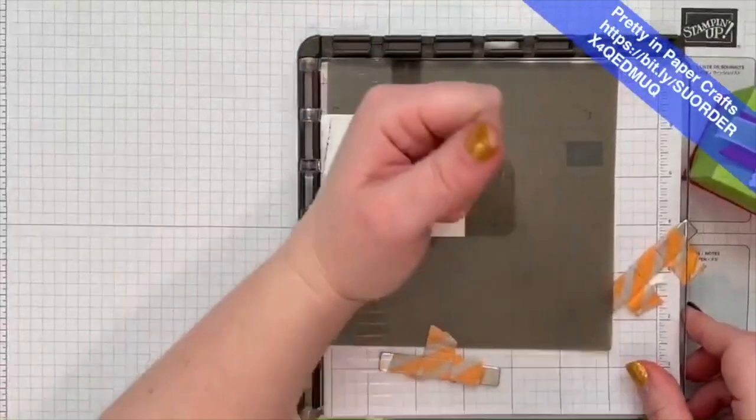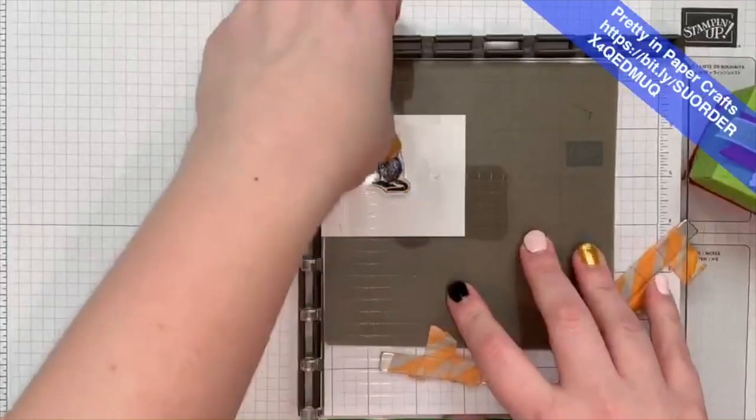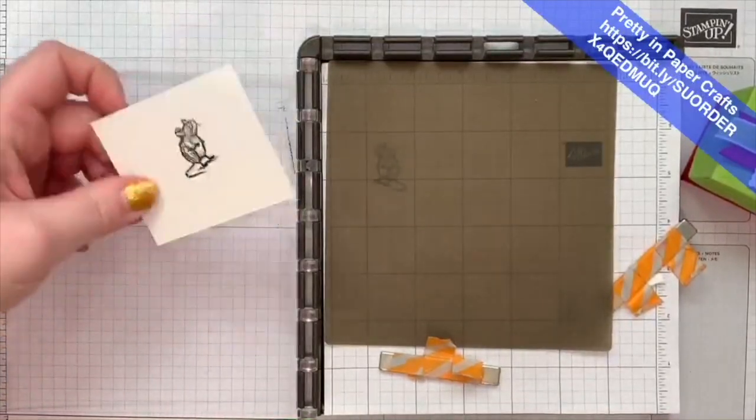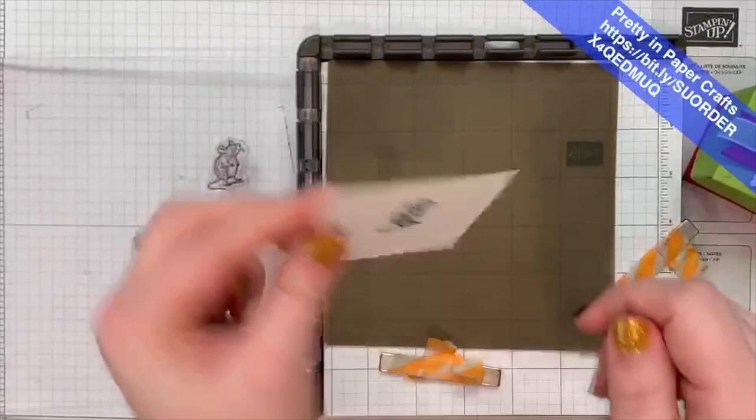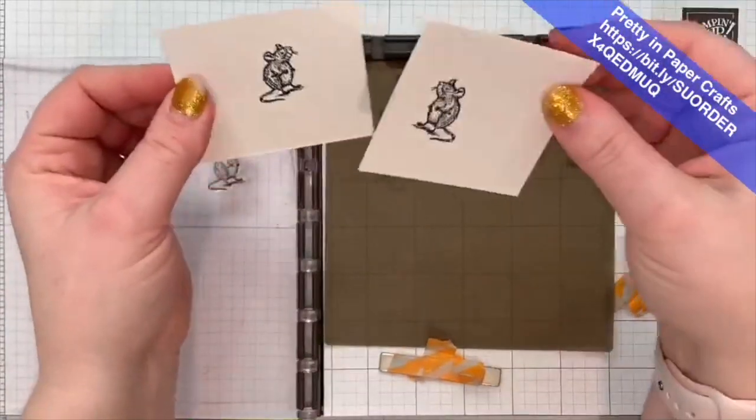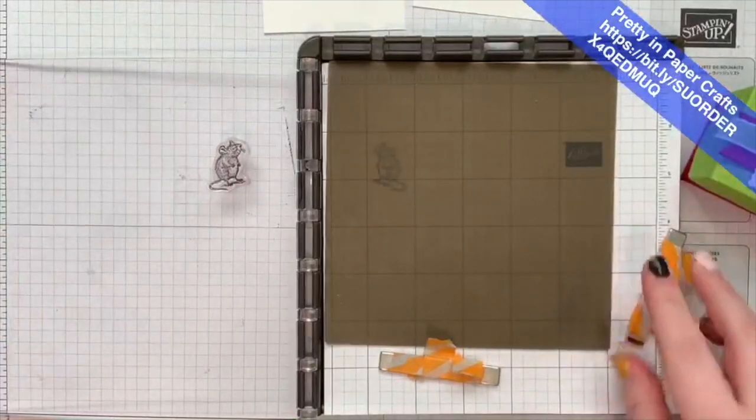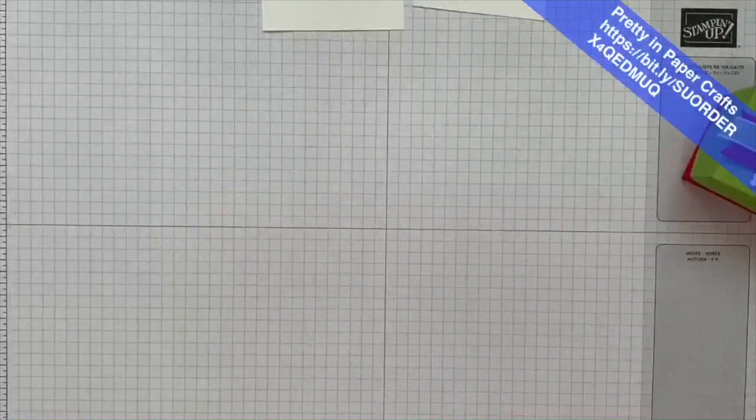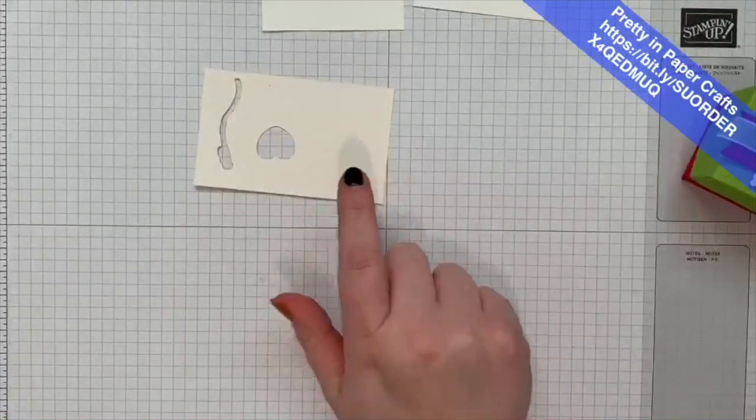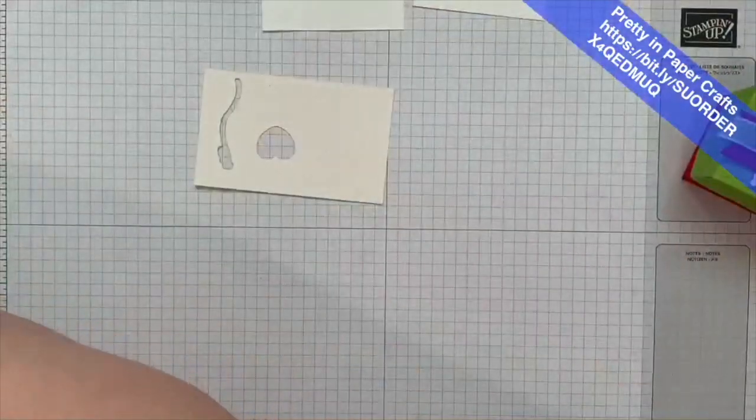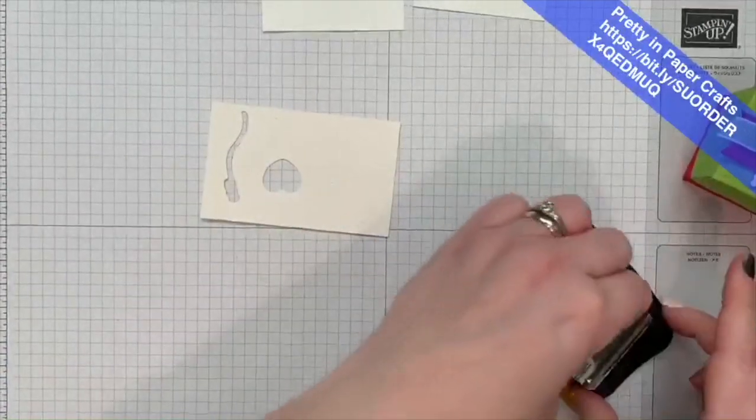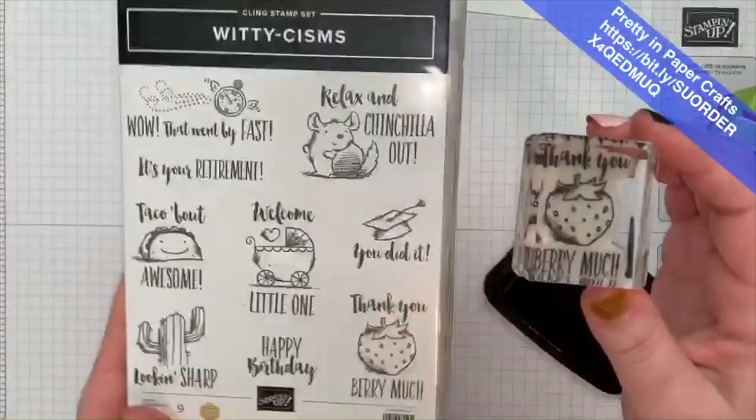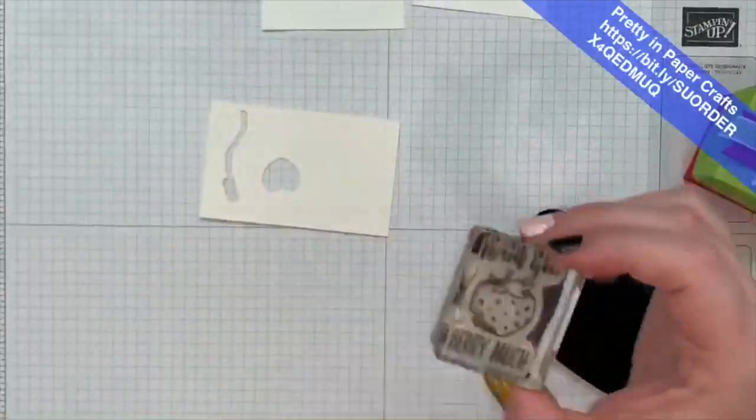And I just didn't want it if it didn't have dies with it. I'm a die snob or something. All right. So, we did that background image. Again, remember on the reverse side. So, here's the right facing mouse. And then here's the opposite facing mouse. So, now we're going to have two mice facing different ways. We have that. Now, I used Memento so I can clean this later. And I won't worry too much about it at the moment. Now, I have to have another piece of Whisper White to do our little strawberry.